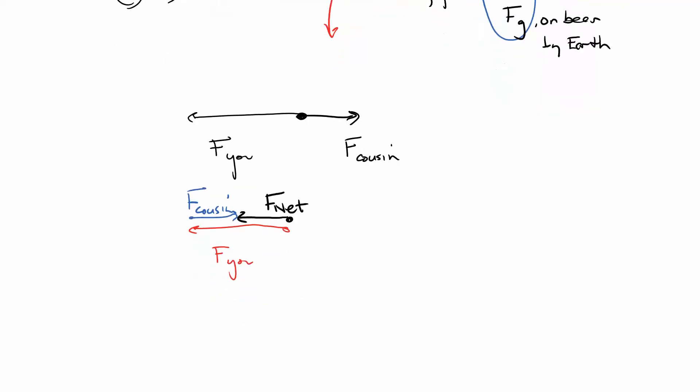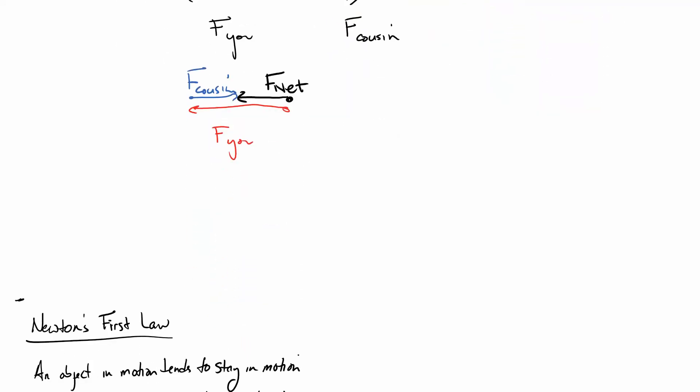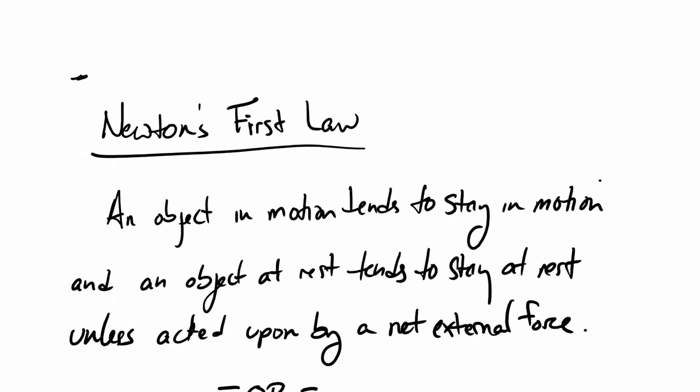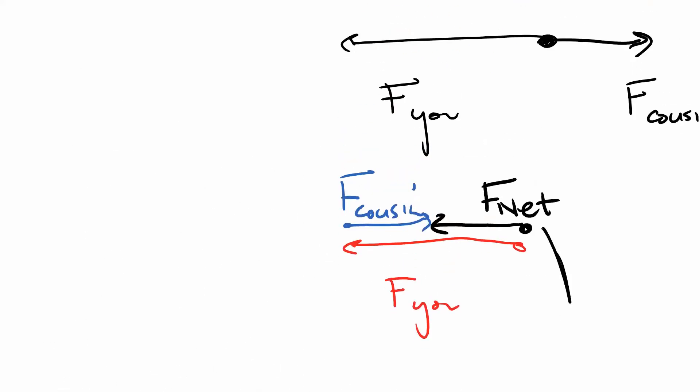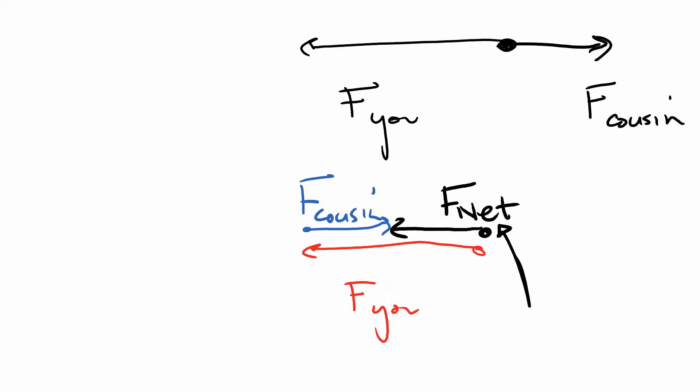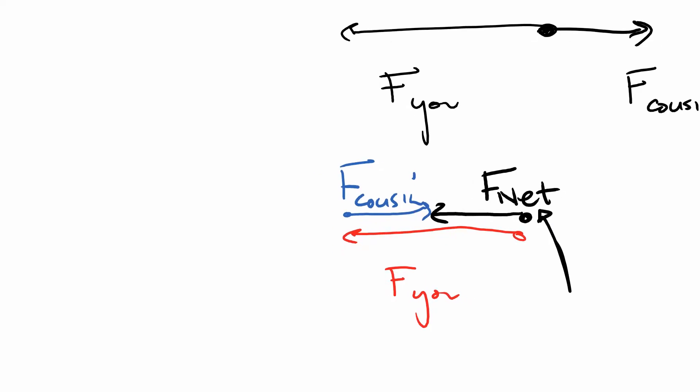So, this is coming back to this idea of Newton's first law. That an object in motion tends to stay in motion, and an object at rest tends to stay at rest unless acted upon by a net external force. This net is what we're talking about here. It's the resulting force when I've added up all of the forces. It doesn't mean we're talking about fishing. It doesn't mean we're talking about gladiatorial combat. It means that we've added up, in this kind of vector-y arrow sense, all of the forces acting on the object.